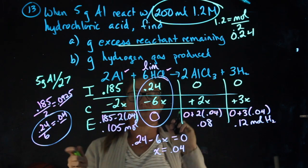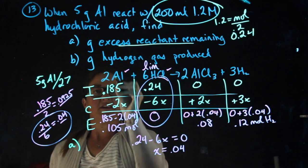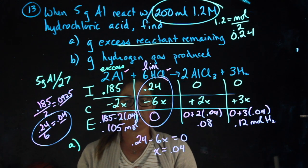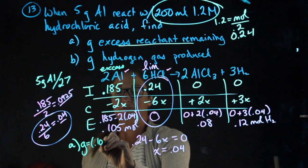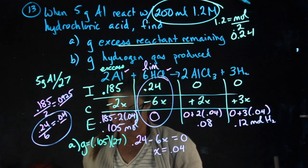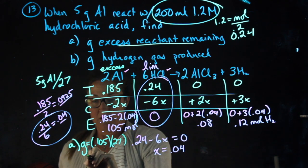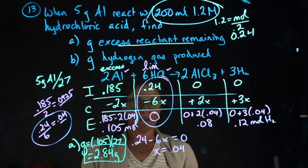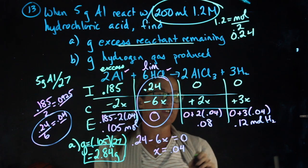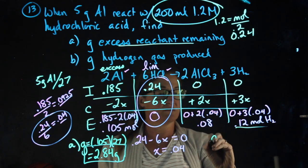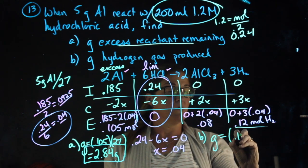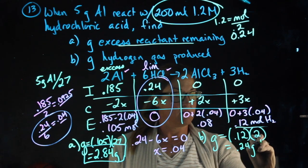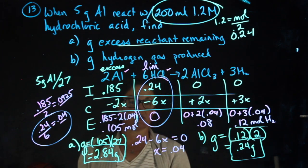For Part A, the grams of excess reactant remaining: aluminum is my excess reactant — the reactant that's not limiting. I have 0.105 moles of it left over, but the question is asking for grams. 0.105 times the molecular weight of 27 gives me 2.84 grams of aluminum. Part B wants to know the grams of hydrogen produced. I produce 0.12 moles. Grams will equal moles times the molecular weight of hydrogen, giving me 0.24 grams of hydrogen produced.